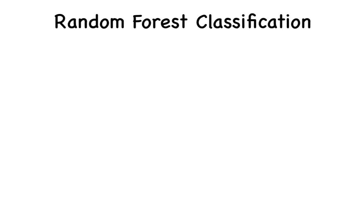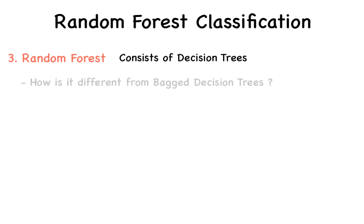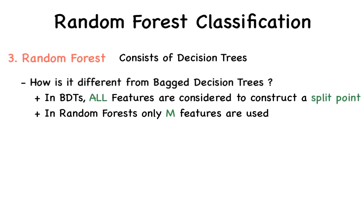Now that we know about bootstrapping and bagging, it'll be easier to understand random forests. Random Forest is named as such because it is constructed from a number of decision trees. In a traditional bagged decision tree, every node takes a look at all n features of training data and chooses one feature and a threshold value where the split is optimal. That is, a split point is chosen. Random Forest, on the other hand, only looks at a subset of the n features in order to choose the split point. In classification problems, the number of features considered by a node is the square root of the number of total features.